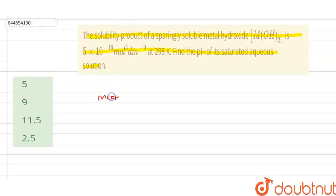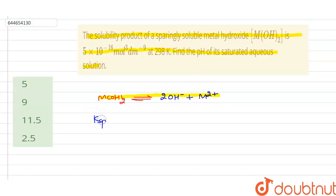First, we write the dissociation of the metal hydroxide in equilibrium: M(OH)₂ gives two moles of OH⁻ ion and one mole of M²⁺ metallic ion. The solubility product Ksp tells about the extent of solubility and equals the concentration of OH⁻ raised to the power of its coefficient, multiplied by the concentration of M²⁺.